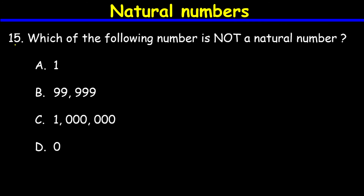Question number fifteen: which of the following numbers is not a natural number? 1 is a natural number, 99,999 is a natural number, 1 million is a natural number, but 0 is not a natural number because natural numbers do not include 0. Therefore the correct answer is choice D.